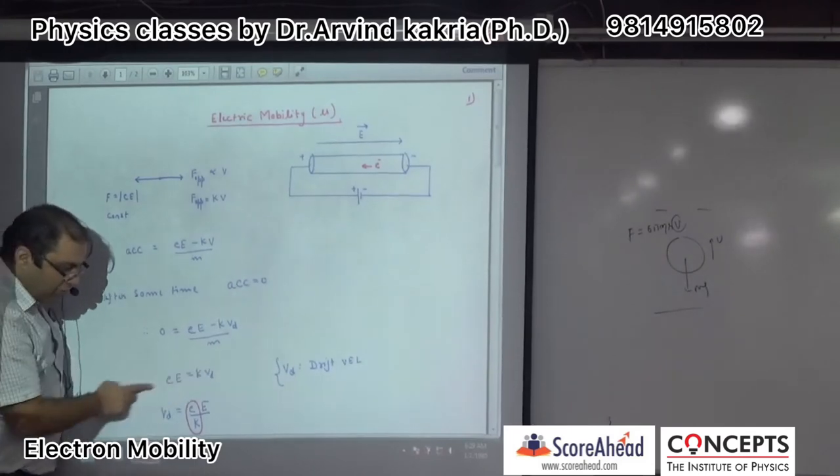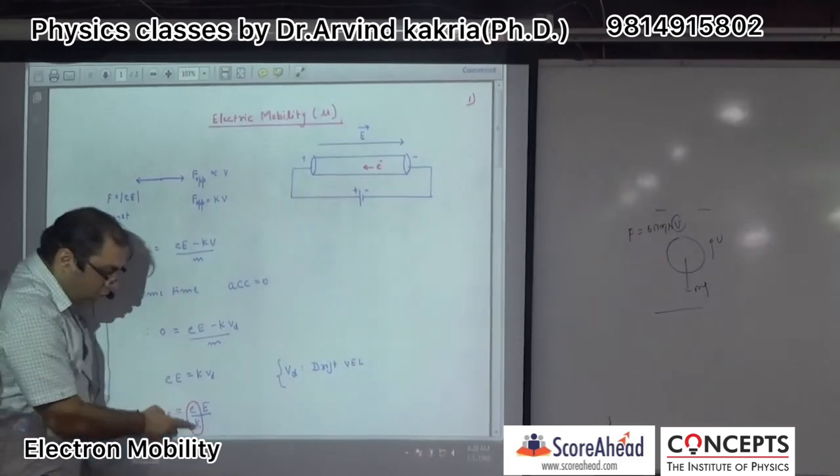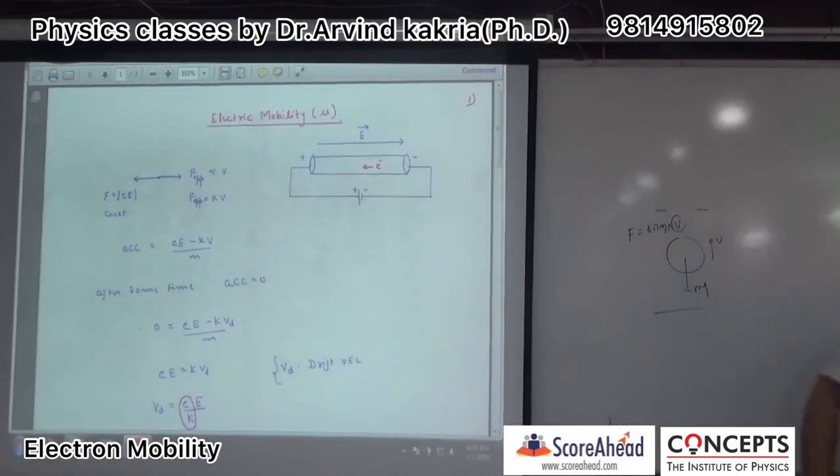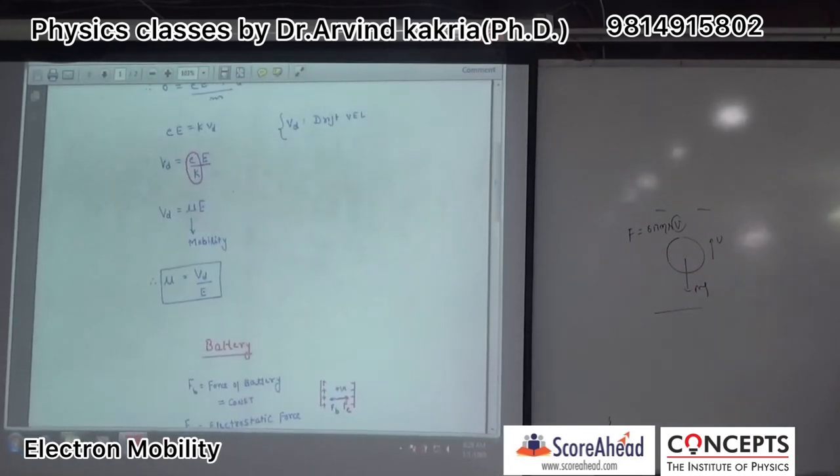The drift velocity formula is vd = E/K. This ratio is a constant called mu (μ), which is the mobility.